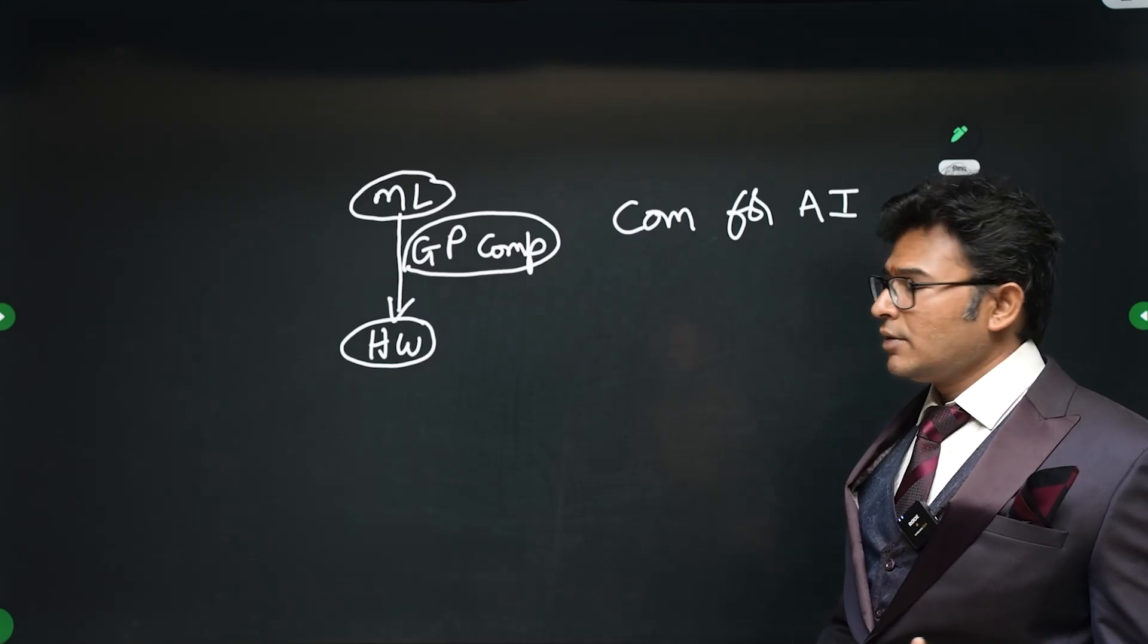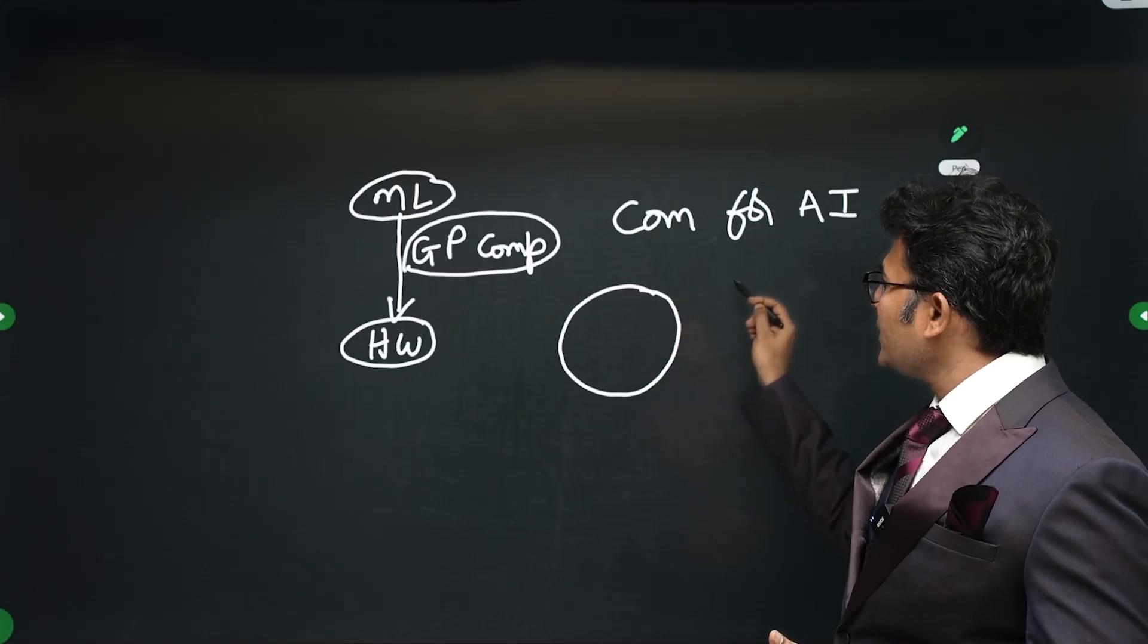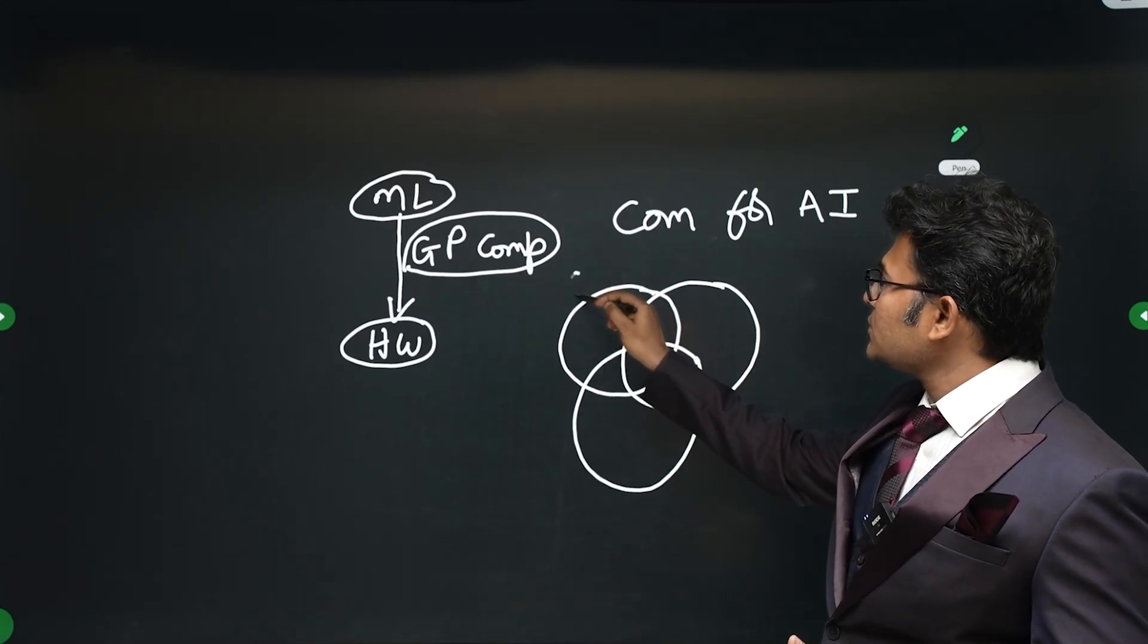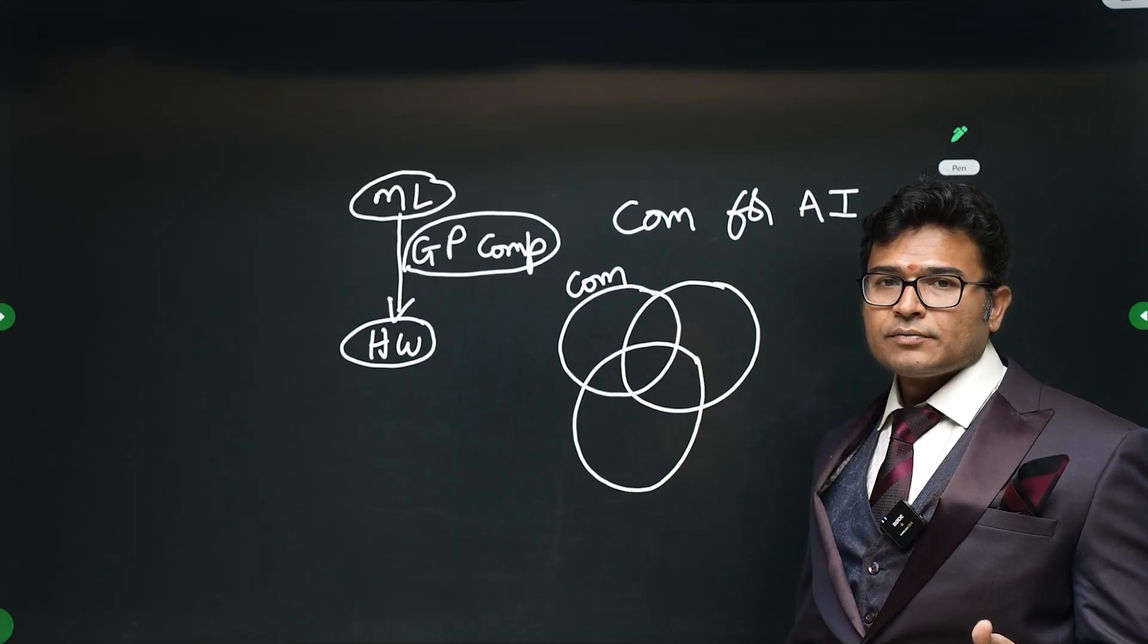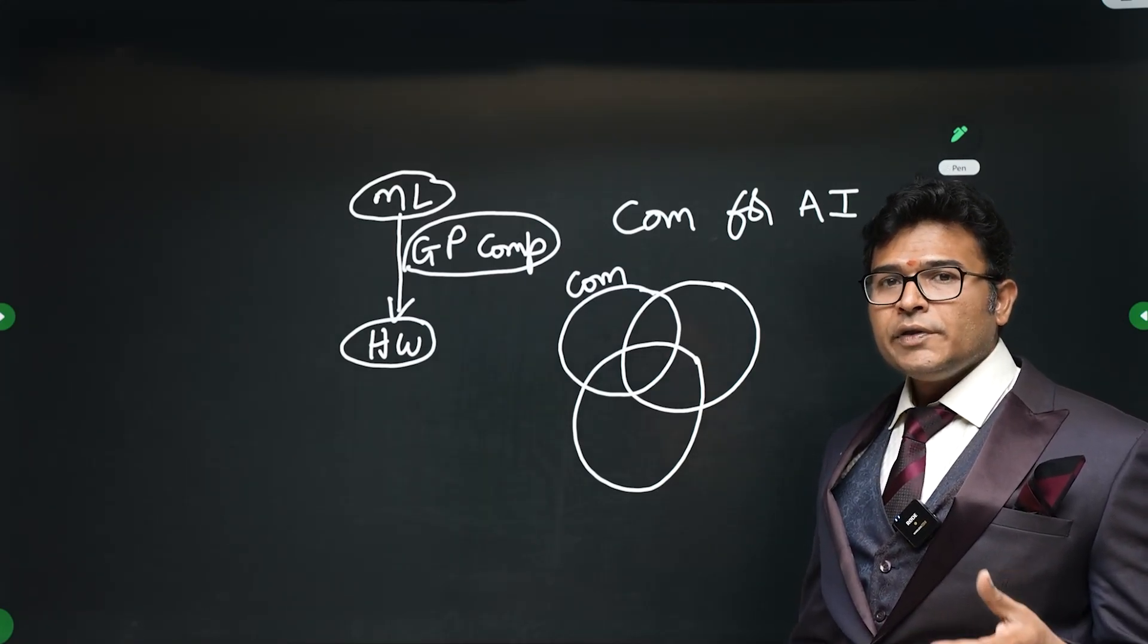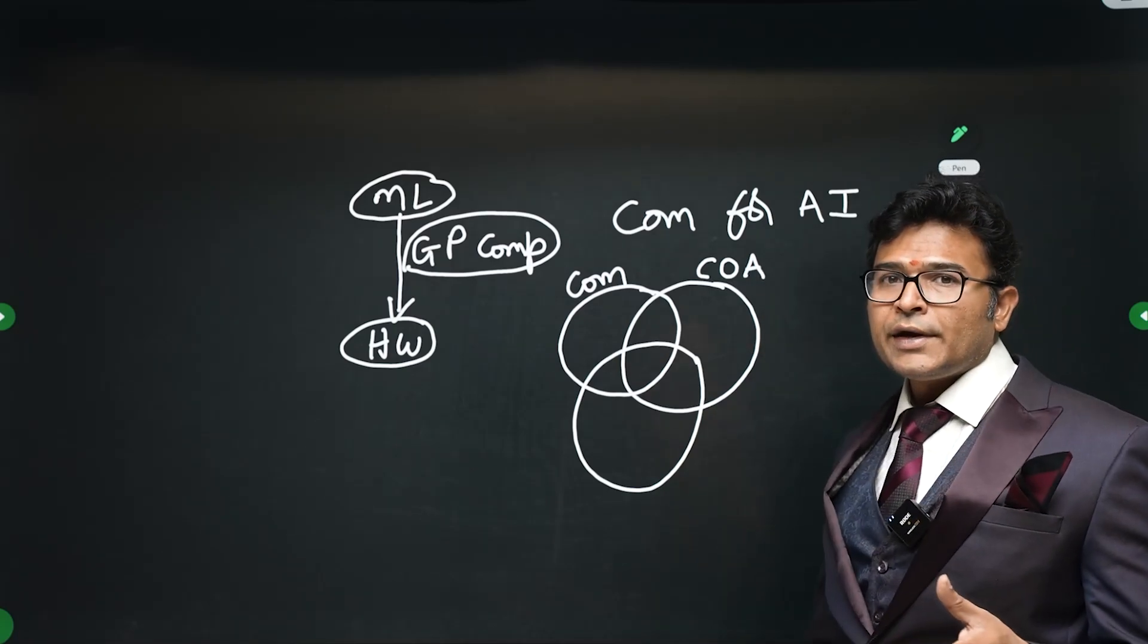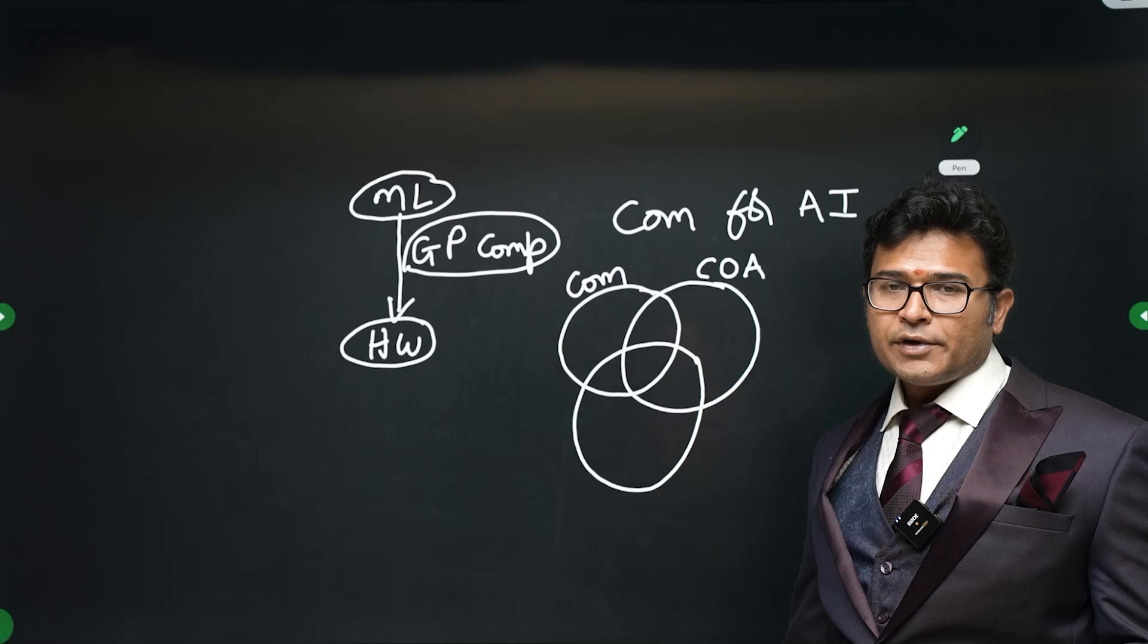If you want to do research in this area, it actually falls under three areas. It is the intersection of three areas. One is compilers - as I told you, I have worked extensively on compilers and I have written a textbook on compilers, so I know in and out of compilers. Now you also should have knowledge on computer organization and architecture.